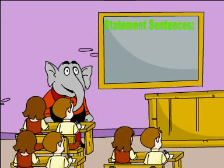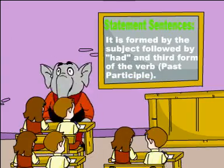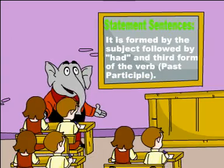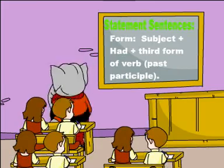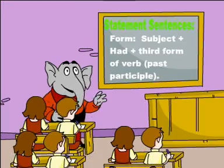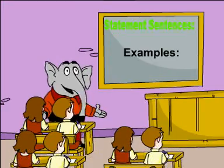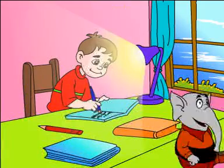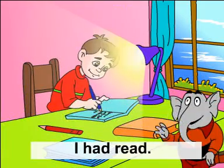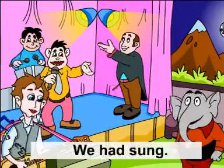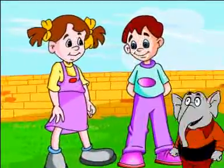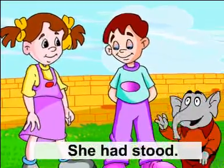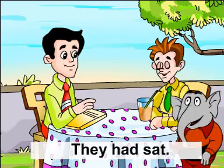1. Statement sentences. It is formed by the subject followed by 'had' and the third form of the verb (past participle). Formula: Subject + had + third form of the verb (past participle). Examples: I had read. We had sung. You had played. She had stood. They had sat.